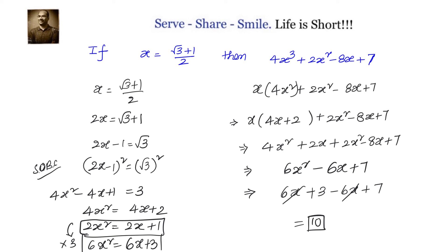Let us have a recap. We were given x equals the square root of 3 plus 1, divided by 2, and had to find the value of 4x cubed plus 2x squared minus 8x plus 7. We can solve this in many ways, but in this video we used the simplest method. We wrote 2x equals root 3 plus 1, then 2x minus 1 equals root 3, squared both sides to get 4x squared equals 4x plus 2, and used 2x squared equals 2x plus 1 to convert all x squared terms into x terms. Finally, simplifying gave us the answer of 10.